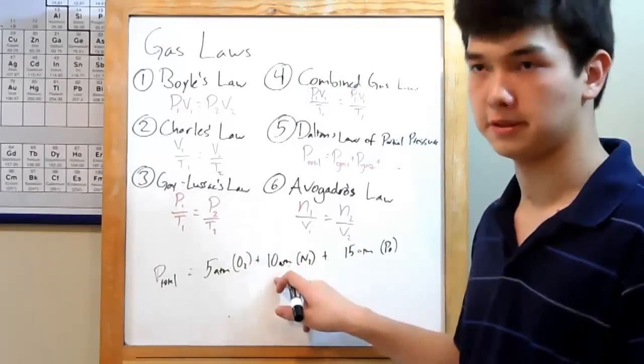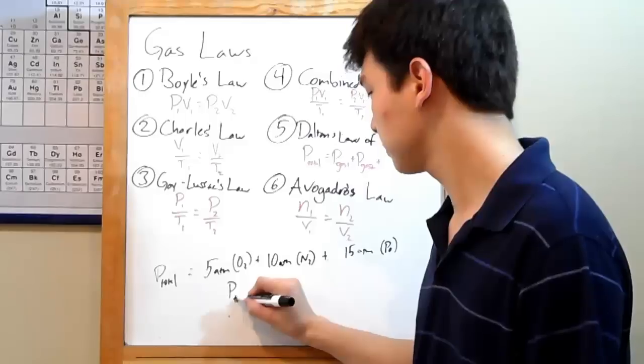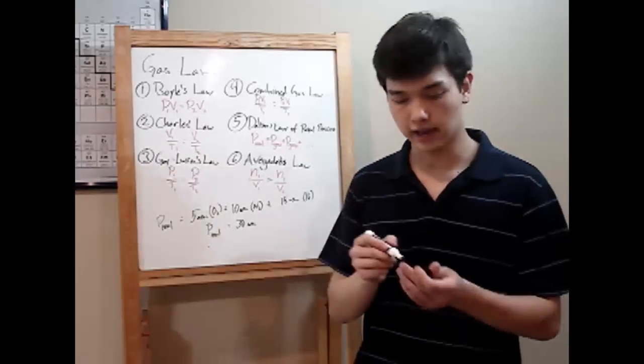5 plus 10, 15. 15 plus 15, 30. The total pressure of your system is 30 atmospheres. The law of partial pressure just says add them all up.